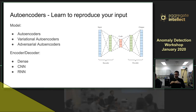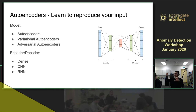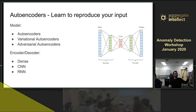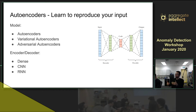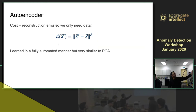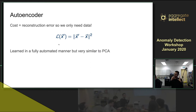If your input is an image, use CNN; for sequential data, use RNN or LSTM, because you can map it to one fixed-size representation and then decompress it. The whole idea is the same: given your input, compress it and decompress it. The variational and adversarial encoders learn the distribution of the data, allowing you to generate samples. The cost is the distance between the generated and original, which we use as the anomaly score.